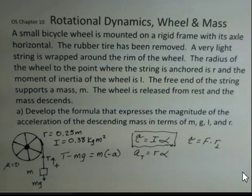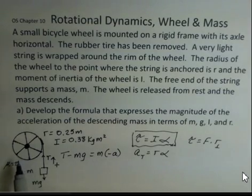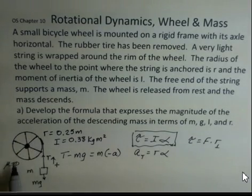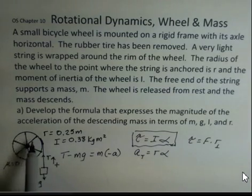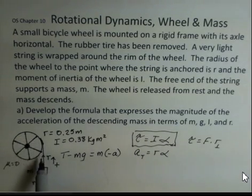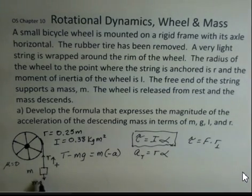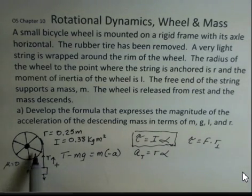This video is an example of rotational dynamics where there's force, torque, moment of inertia, and acceleration. The situation being examined here is that there is a bicycle wheel with the axis mounted horizontal and no friction in this axle. It's a light bicycle wheel that took the tire off, so there's a groove that we can wrap string around the tire, and this string partially supports a mass that will be descending towards the ground when we let go of the wheel.